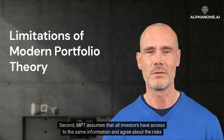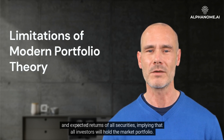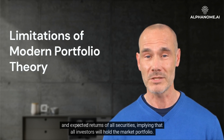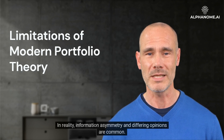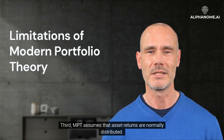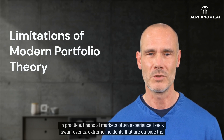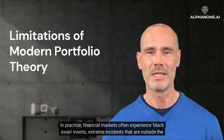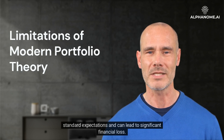Second, MPT assumes that all investors have access to the same information and agree about the risks and expected returns of all securities, implying that all investors will hold the market portfolio. In reality, information asymmetry and differing opinions are common. Third, MPT assumes that asset returns are normally distributed. In practice, financial markets often experience black swan events — extreme incidents that are outside the standard expectations and can lead to significant financial loss.